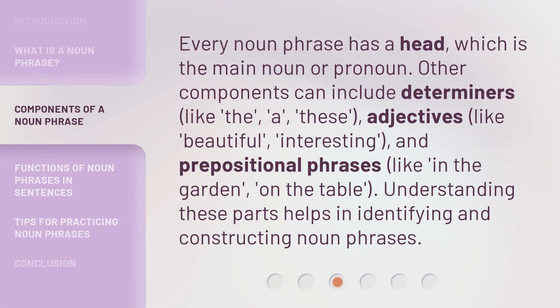Every noun phrase has a head, which is the main noun or pronoun. Other components can include determiners like 'the,' 'a,' and 'these,' adjectives like 'beautiful' and 'interesting,' and prepositional phrases like 'in the garden' and 'on the table.' Understanding these parts helps in identifying and constructing noun phrases.